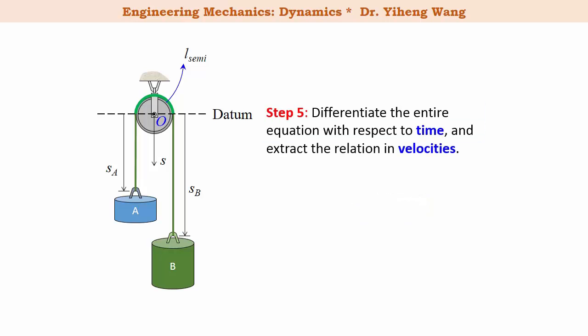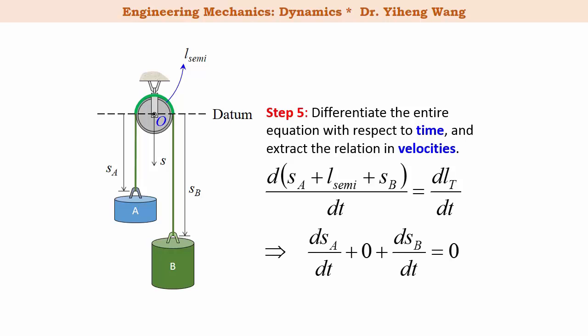And now we can take the previous equation and take the time derivative of the entire equation, and that becomes dSA/dt plus zero plus dSB/dt equals to zero. By definition, the time derivative of position is the velocity, therefore dSA/dt is simply the velocity VA, and dSB/dt is the velocity VB. Therefore this becomes VA plus VB equals to zero, or VA equals to negative VB.